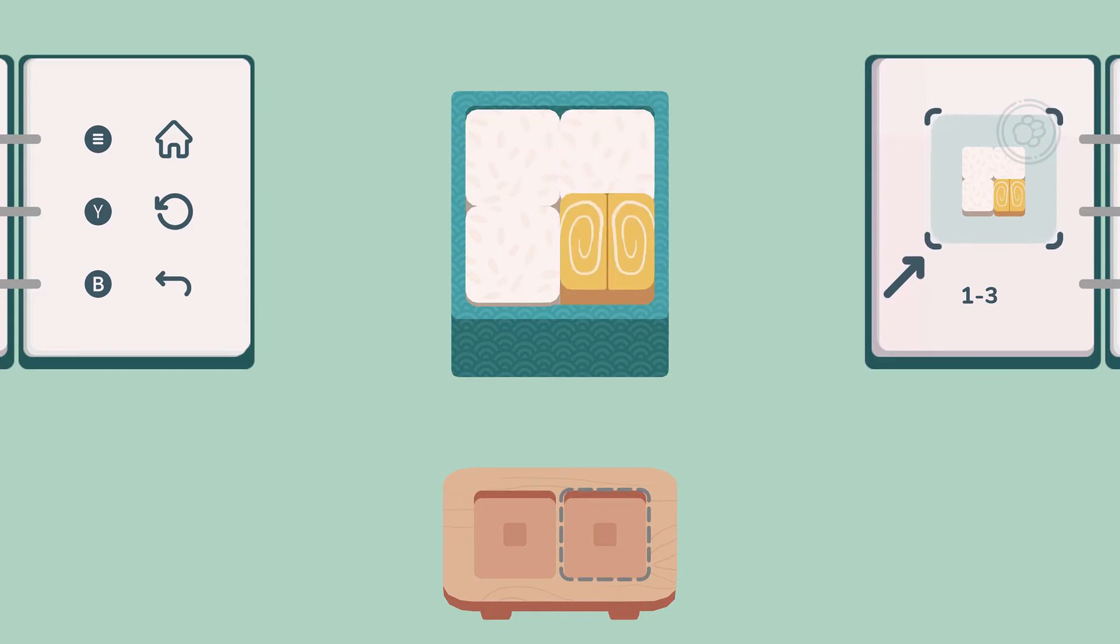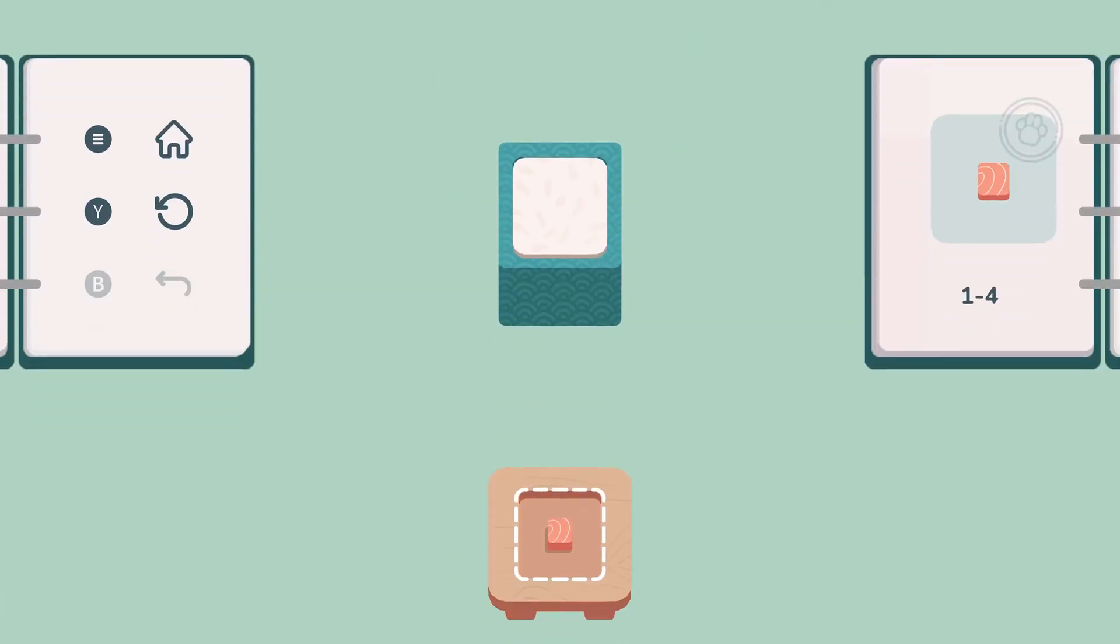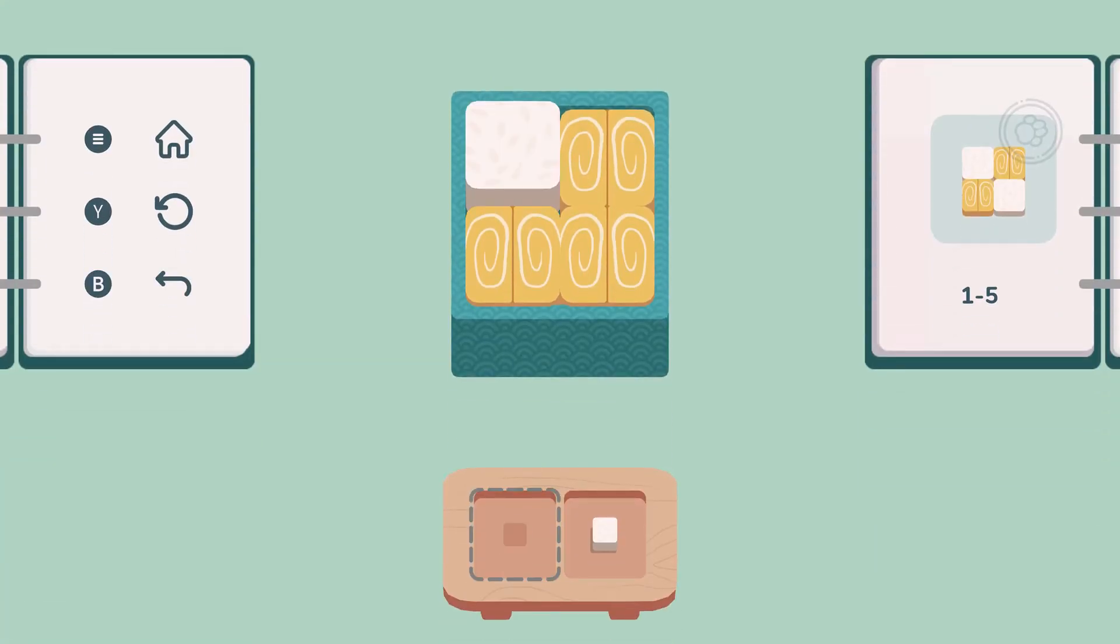When you first start out in the game, you're going to be presented with a sort of filled bento box and then pieces that you need to use that require you to finish the puzzle that's demonstrated on the right side of your screen. So you have to make the box that you're forming match what you see on the screen to your right.